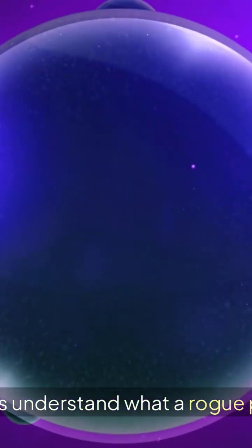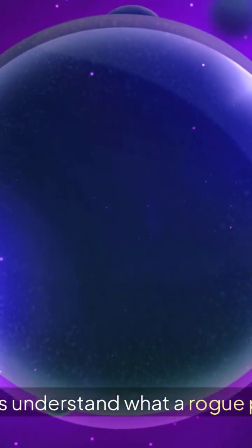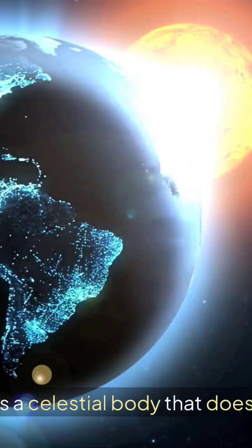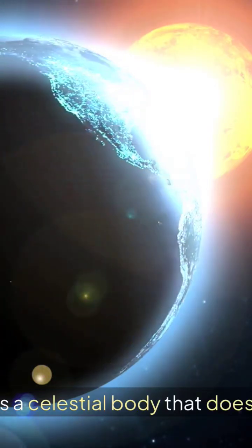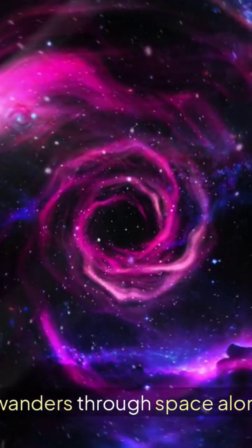First, let's understand what a rogue planet is. A rogue planet is a celestial body that does not orbit a star. It wanders through space alone.